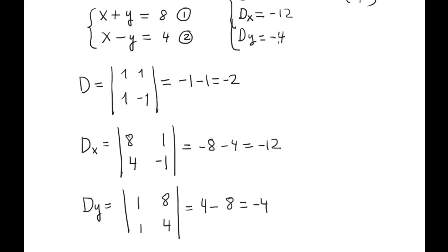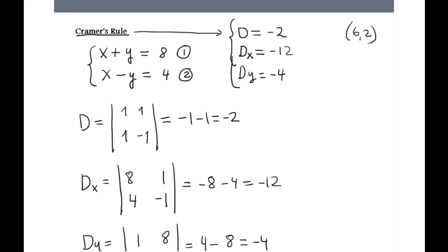Almost finished. Now Cramer's rule says in order to find x value, you divide Dx by D. You want to find the y value, you divide Dy by D.